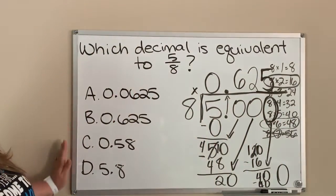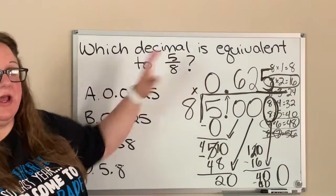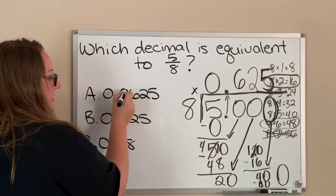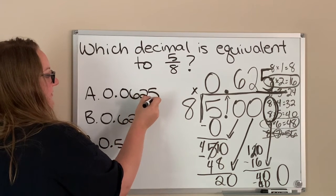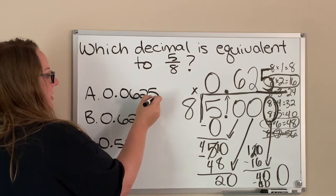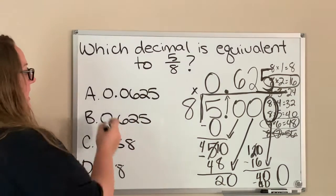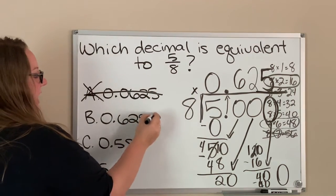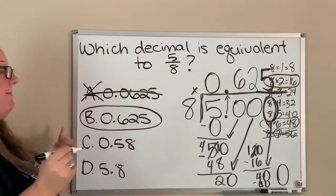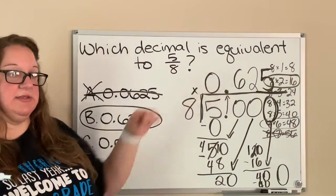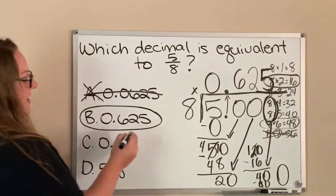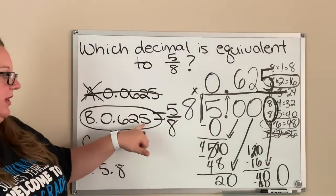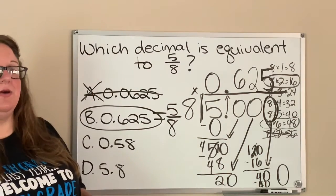Five times eight is 40, and 40 minus 40 is zero — so I've gotten a zero, which means I can stop. I look at my answer choices to see which decimal matches what I got. Answer B matches exactly — so five eighths equals 0.625, or six hundred twenty-five thousandths.